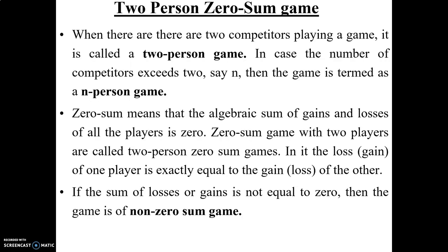There is a theory called the two-person zero-sum game. When there are two competitors — say player A and player B — it is called a two-person game. If the number of competitors exceeds two to say n, then the game is termed an n-person game — for example, if players become three, four, five, six, seven, and so on.